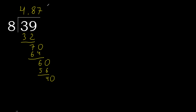8 multiplied by 5 is not greater. Subtract. 0. Therefore finish it. 39 divided by 8 is here.